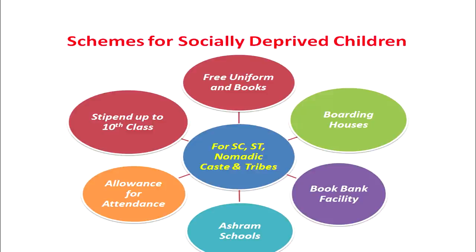These schemes included free uniforms and textbooks to the children of these communities. Then boarding houses have been established for the children of these schools. There was book bank facility for the children of these communities. Ashram schools — Ashram Shalas — have been established for the children of these communities. Then allowances for attendance: if a child is attending school regularly, special allowances are given to those children to motivate them to come to school and to retain them. Stipends are also given to the children of these communities up to 10th class, so that they can join the mainstream in the process of development. There are 6 different schemes which have been taken by the state of Maharashtra for the welfare of socially deprived children.